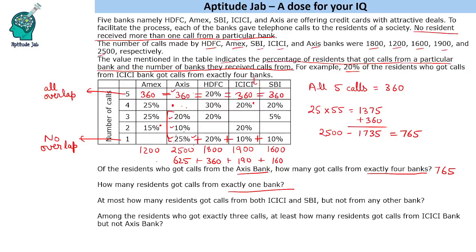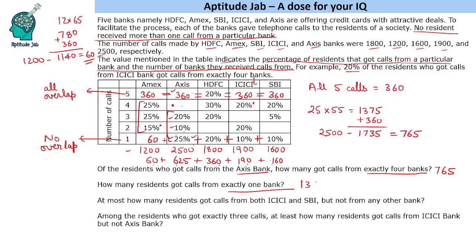Like we found the value for X's bank, we can find this value as well. For MX: 50% plus 15% = 65%, and 12 × 65 = 780, plus 360 for all five calls gives 1140 total accounted for. There are 1200 people who got calls from MX. Subtracting 1140 from 1200 gives 60. Now just add all the values: 60 + 625 + 360 + 190 + 160 gives a running total of 350, 710, 770, and the final total is 1395.